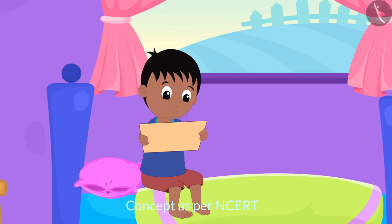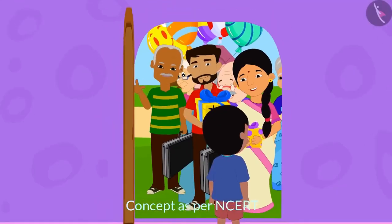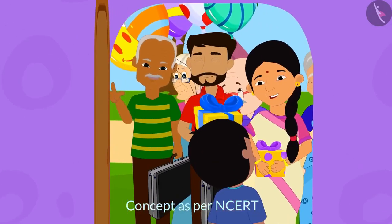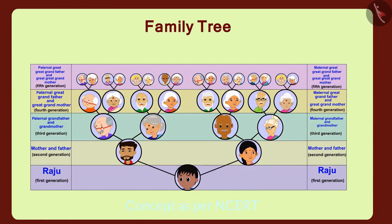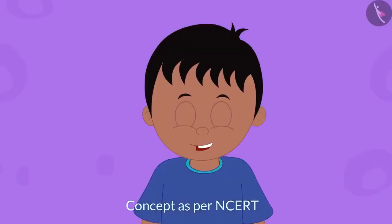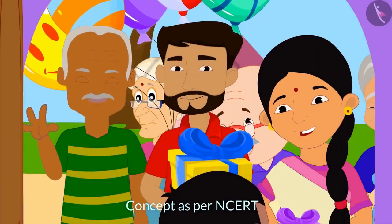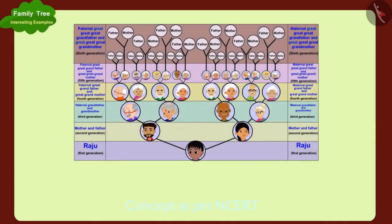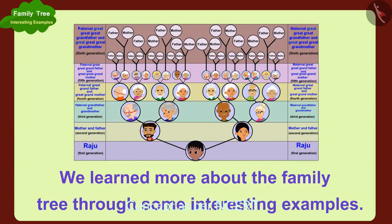Just then, Raju's doorbell rang. When Raju opened the door, he saw that the relatives he had until now only seen in the family tree were now in front of his eyes, come to celebrate his birthday. Children, in this video we learned more about the family tree through some interesting examples.